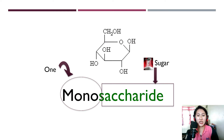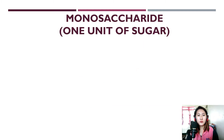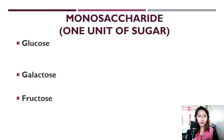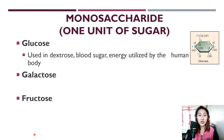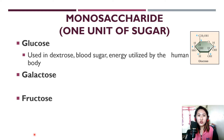First, we have monosaccharide. 'Mono' means one and 'saccharide' means sugar. It is composed of one unit of sugar. Monosaccharide is composed of glucose, galactose, and fructose. Here is the structure of glucose. Glucose is used in dextrose — yung nakalagay sa dextrose natin is glucose. It is also found in blood sugar, and it is the energy utilized by the human body. The different carbohydrates we intake are converted into glucose, which is then readily used by our body as energy.